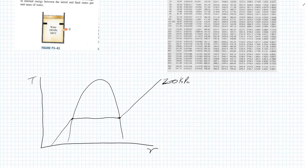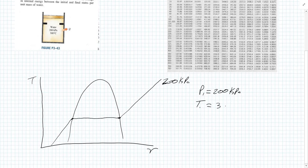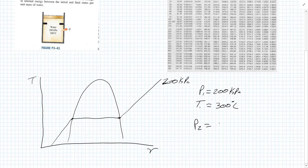Water is initially at 200 kPa, so our first pressure is P1 = 200 kPa with initial temperature T1 = 300 degrees Celsius. It is contained in a piston cylinder with stops, and the water is allowed to cool at a constant pressure, so P2 equals P1, because it's allowed to cool at constant pressure until it exists as a saturated vapor.